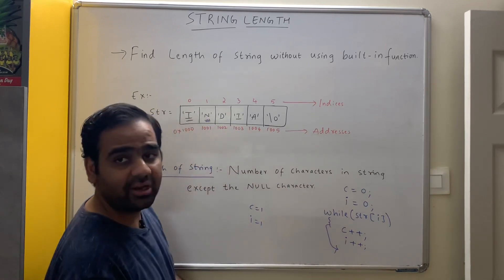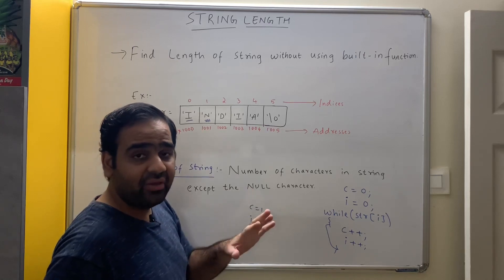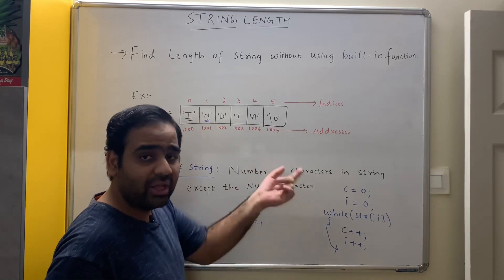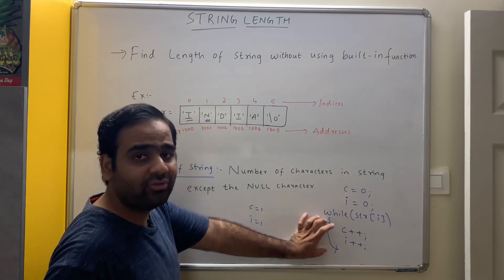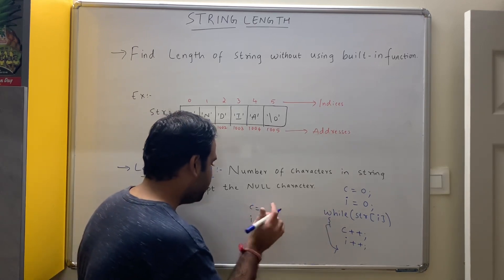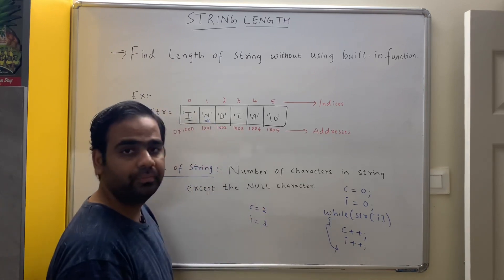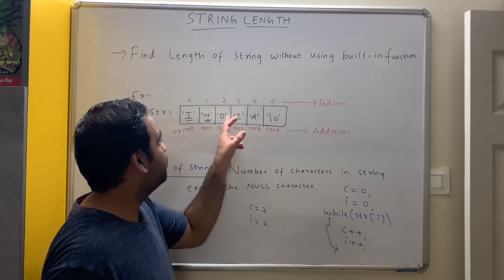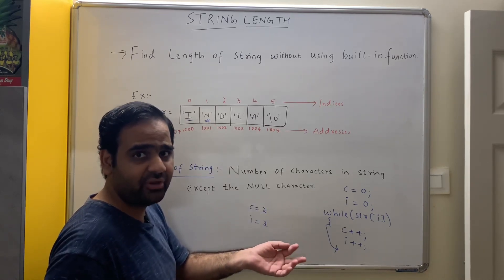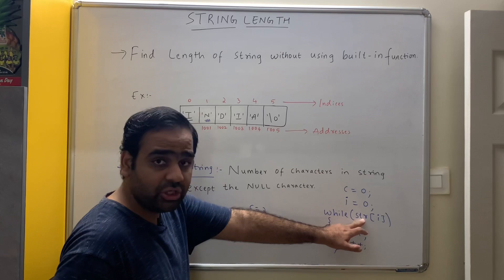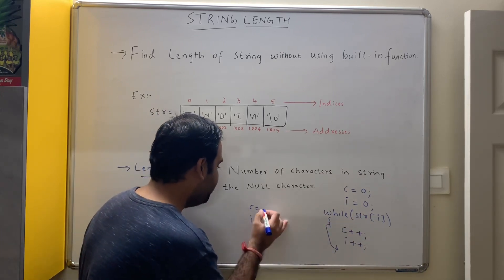The value of i will become 1. Go back. str[1] is 'n'. The ASCII value of 'n' is non-zero, therefore it is true. Execute the body of the while loop: c++ — c becomes 2, i++ — i also becomes 2. Go back. str[2] is 'd'. The ASCII value of 'd' is 68, non-zero, therefore it is true. Hence, c++ — the value of c will become 3.